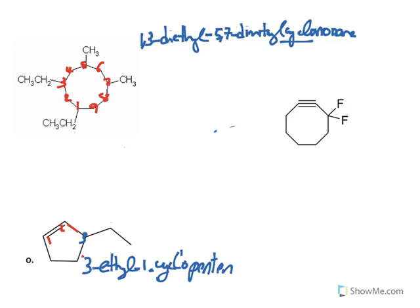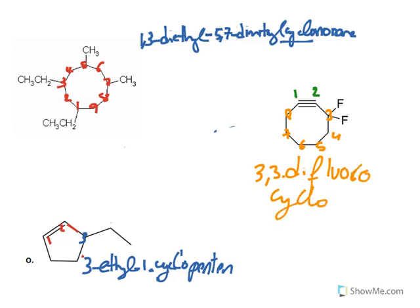Moving on to the cycloalkyne example: as mentioned, the triple bond should always be between carbon one and two. Counting in one direction gives the fluorine substitutions a higher carbon number, which is not favored. So counting one through eight in the preferred direction, the fluorine substitutions are both on carbon three. It's a cyclooctyne with two fluorines at C3: 3,3-difluoro-1-cyclooctyne.